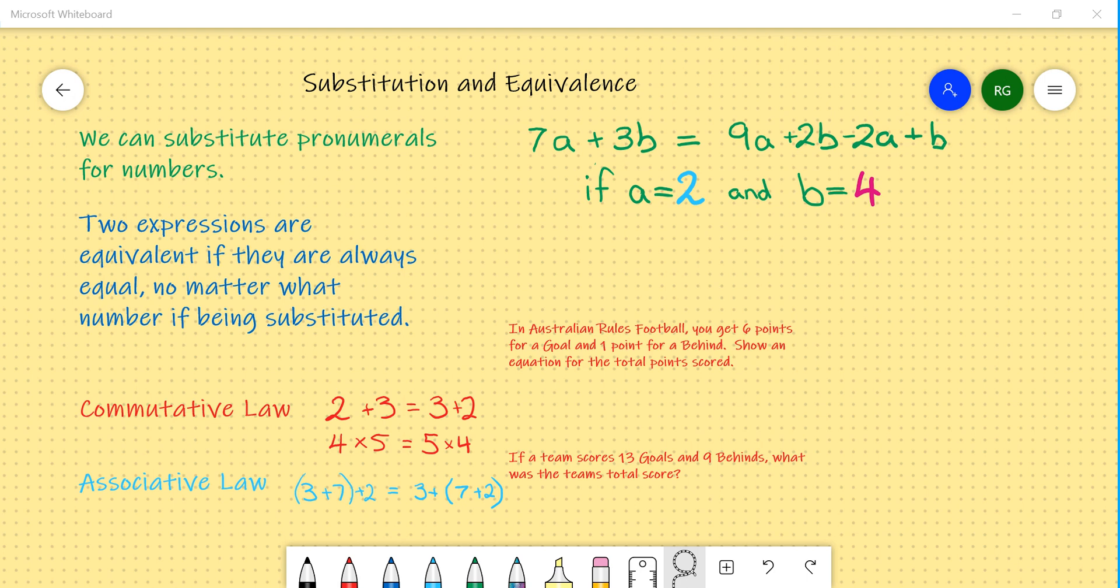We know from previous years that we can substitute pronumerals for numbers. In other words, pronumerals represent an unknown number. Sometimes we are given that unknown. So I have an example on the right hand side where a is equal to 2 and b is equal to 4. Now we'll come back to that one in a little moment.